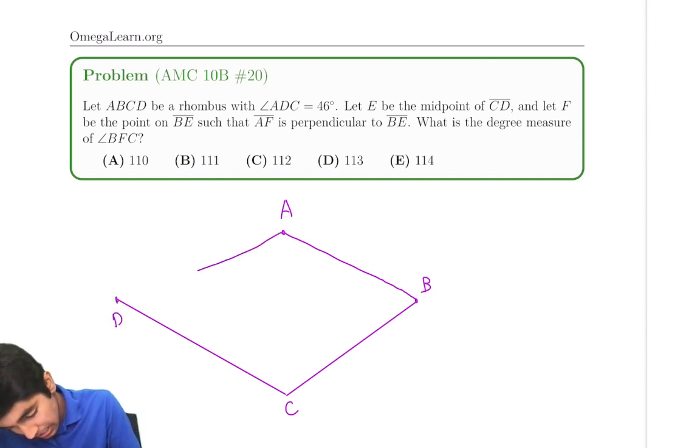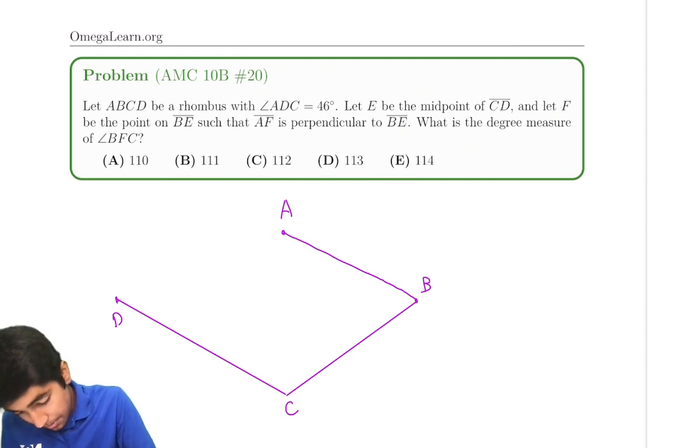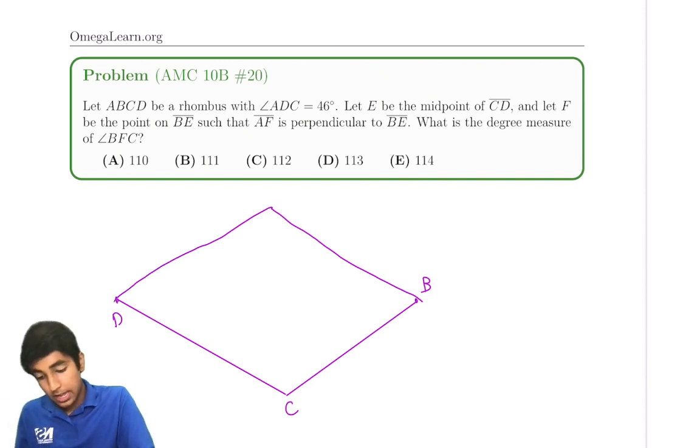Let's draw that better. Maybe something like this. So we have got a rhombus and basically we're given the angle condition ADC. So angle ADC is 46 degrees.